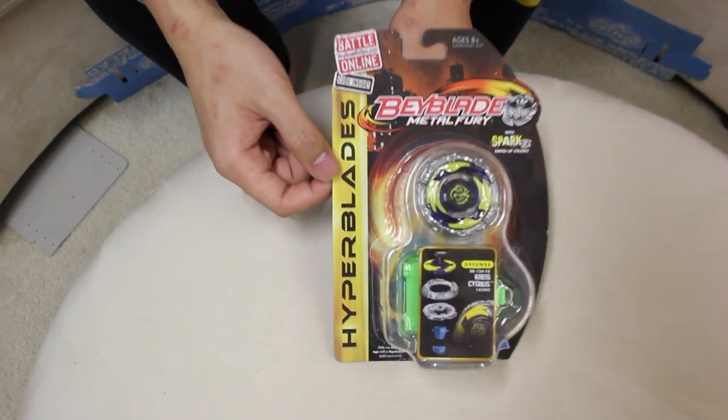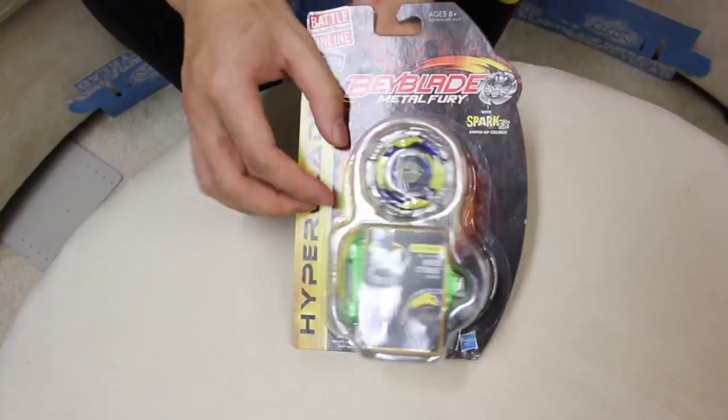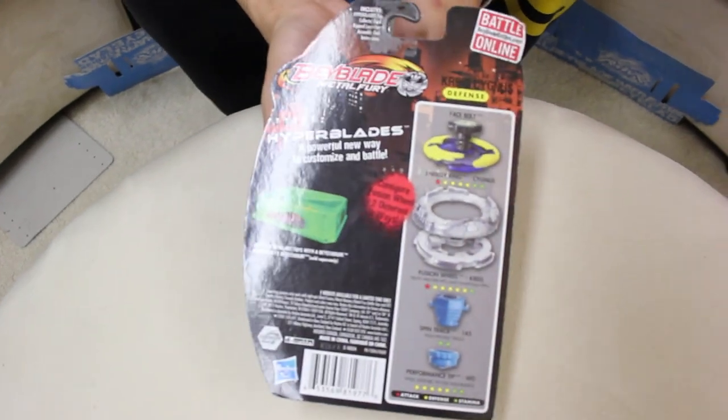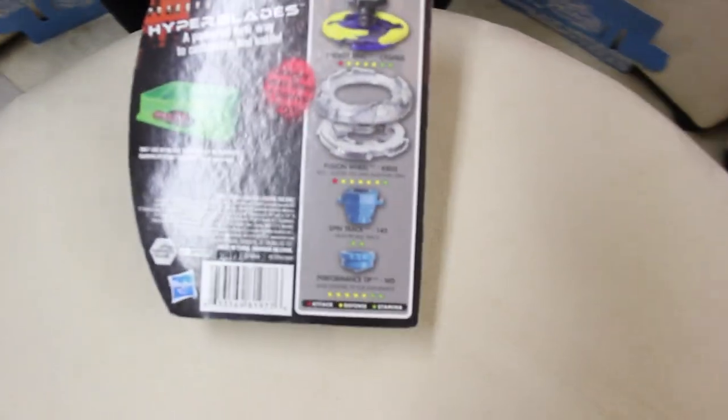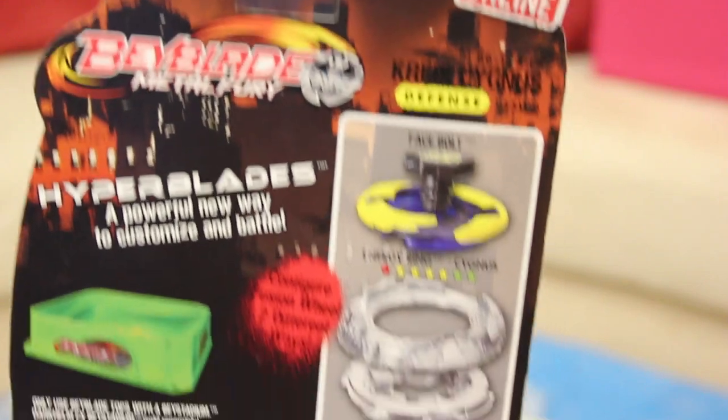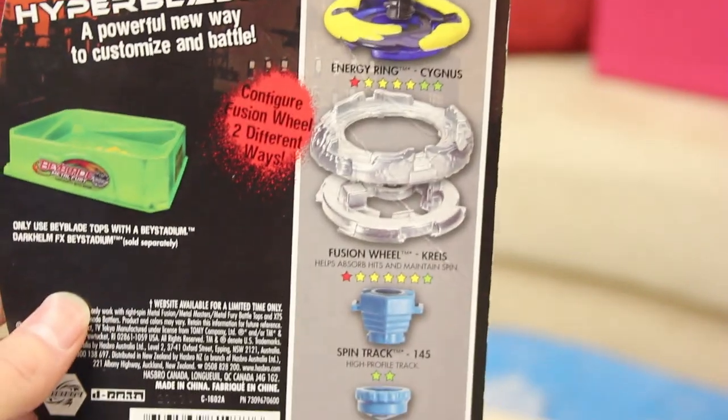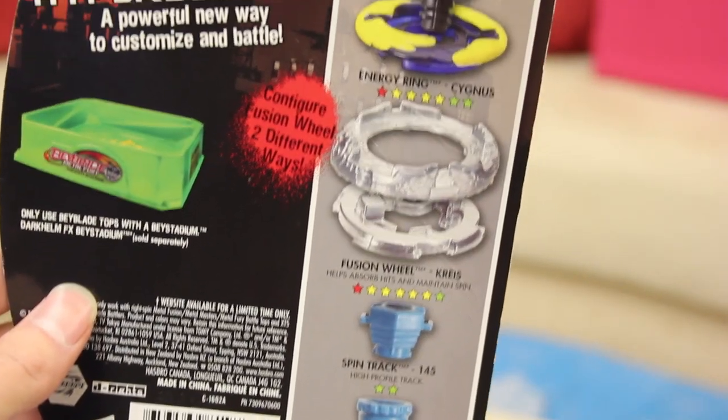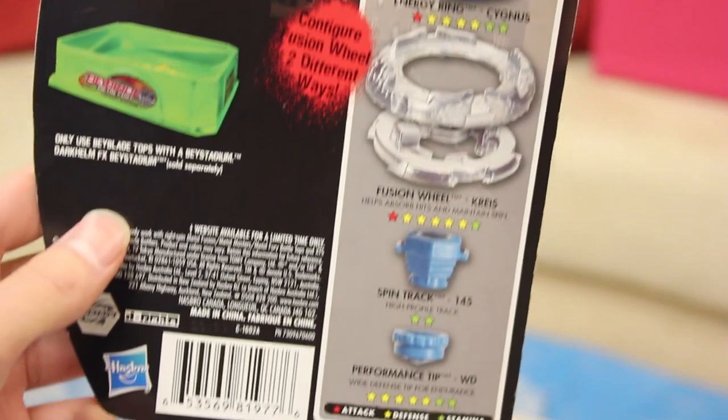So let's check around the box. Let's take a look at the back. The Swan Beyblade. Black Swan. Hyperblade is a powerful new way to customize and battle. Configure fusion wheels two ways and as you can see there's yellow wings on the energy ring and I'm just gonna unbox to show you a closer look.